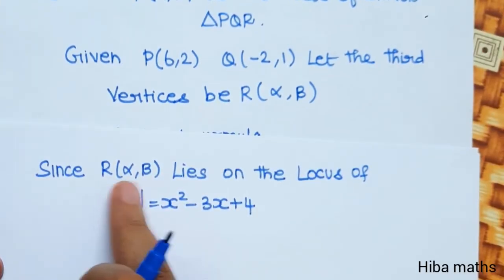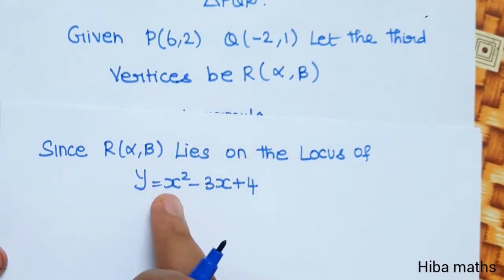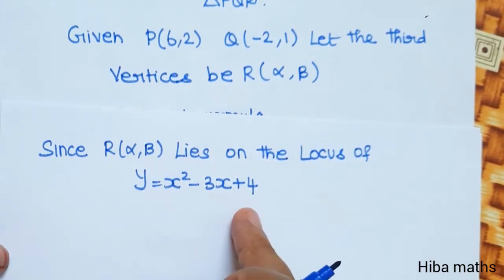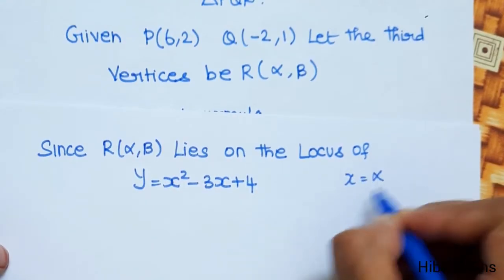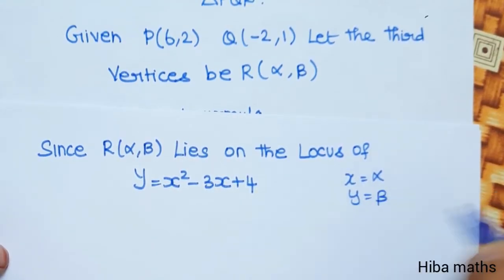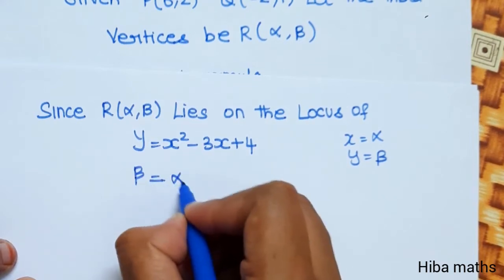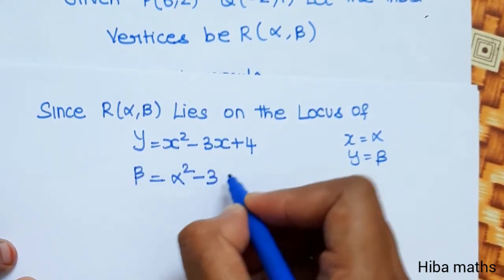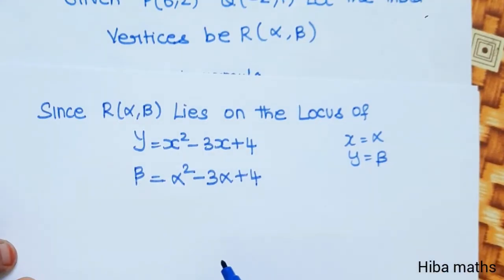Since R(α, β) lies on the locus y = x² - 3x + 4, we substitute x = α and y = β, giving β = α² - 3α + 4.